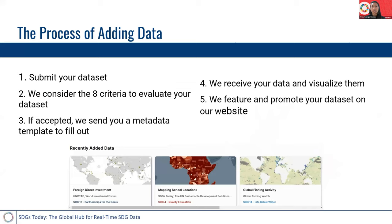I'll go through the process of adding a dataset. Typically we'll ask a data provider to submit their dataset to our website. After that, we'll review all of the information they've given us on the form and consider the eight criteria to make sure the dataset is applicable to our website. Once we determine that we'd like to feature it, we'll send a metadata template to fill out so we have all the information we need. Then we'll receive the data, visualize it on maps and dashboards, and finally feature it on its own dataset page and promote it on all of our social media.